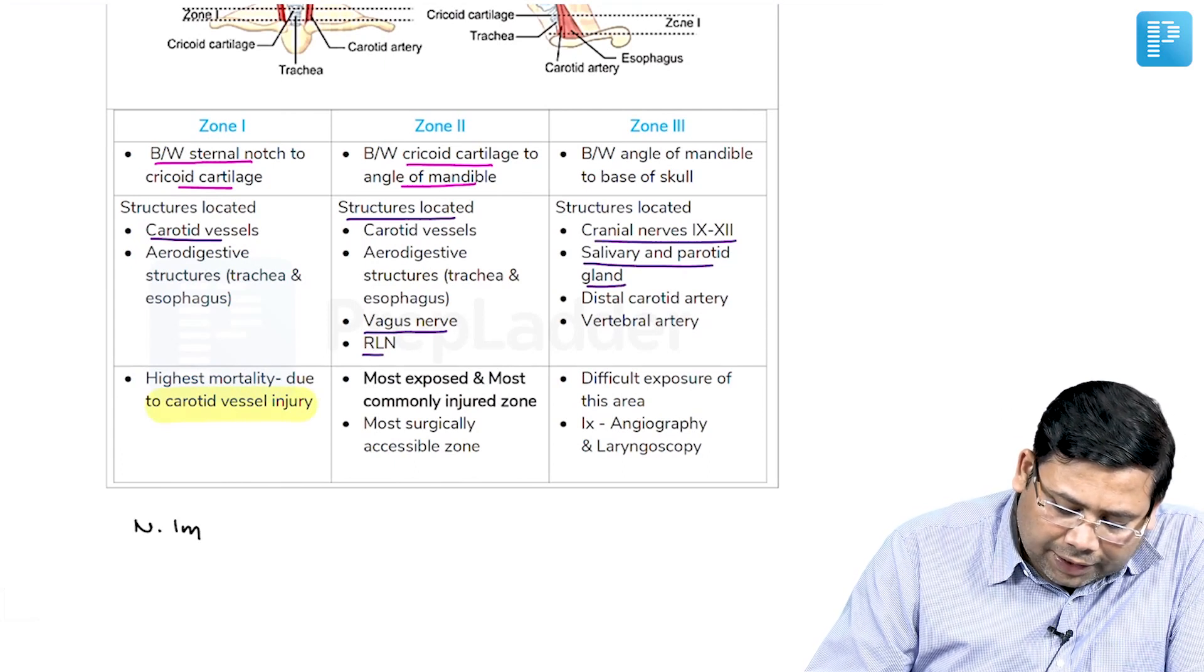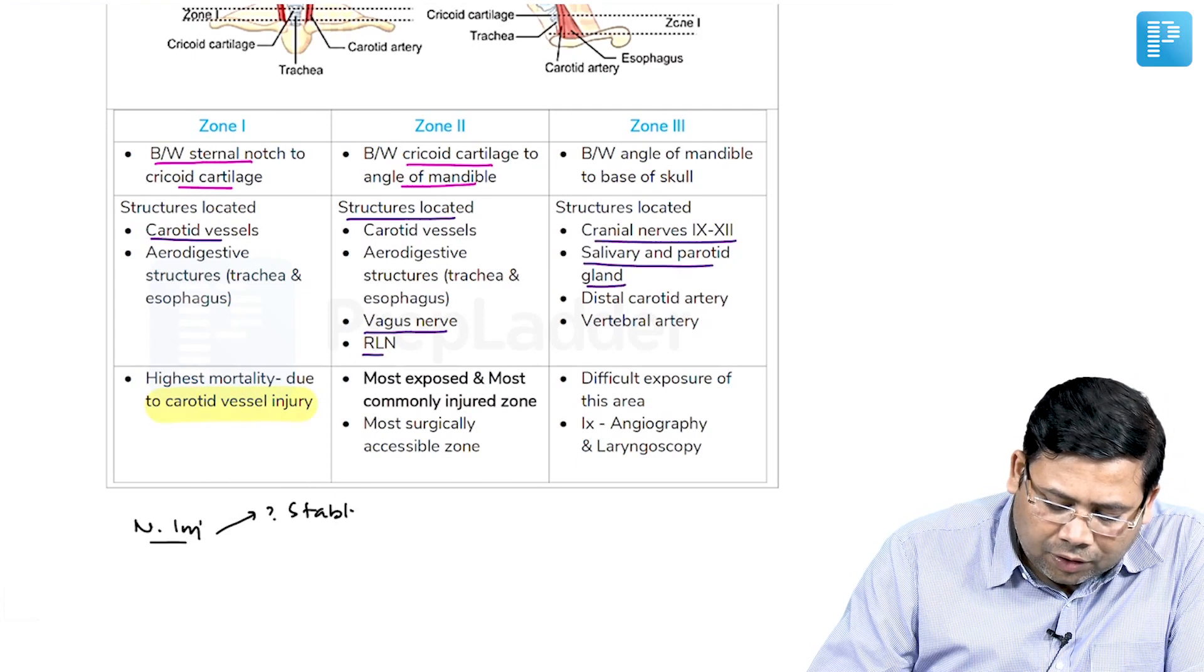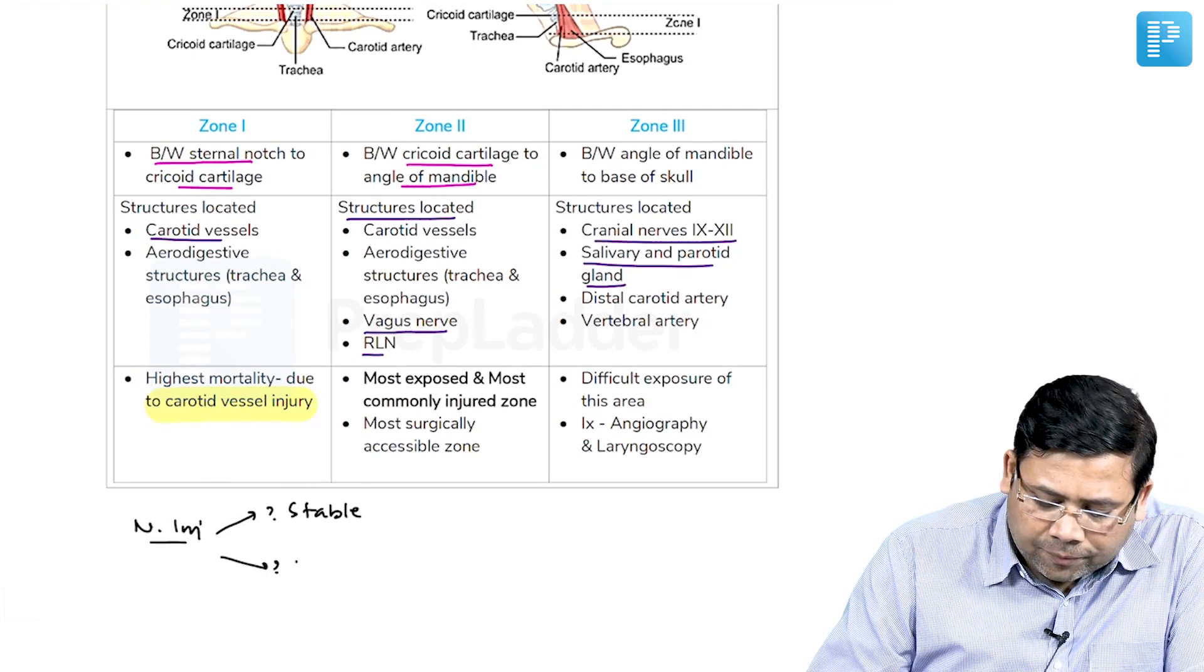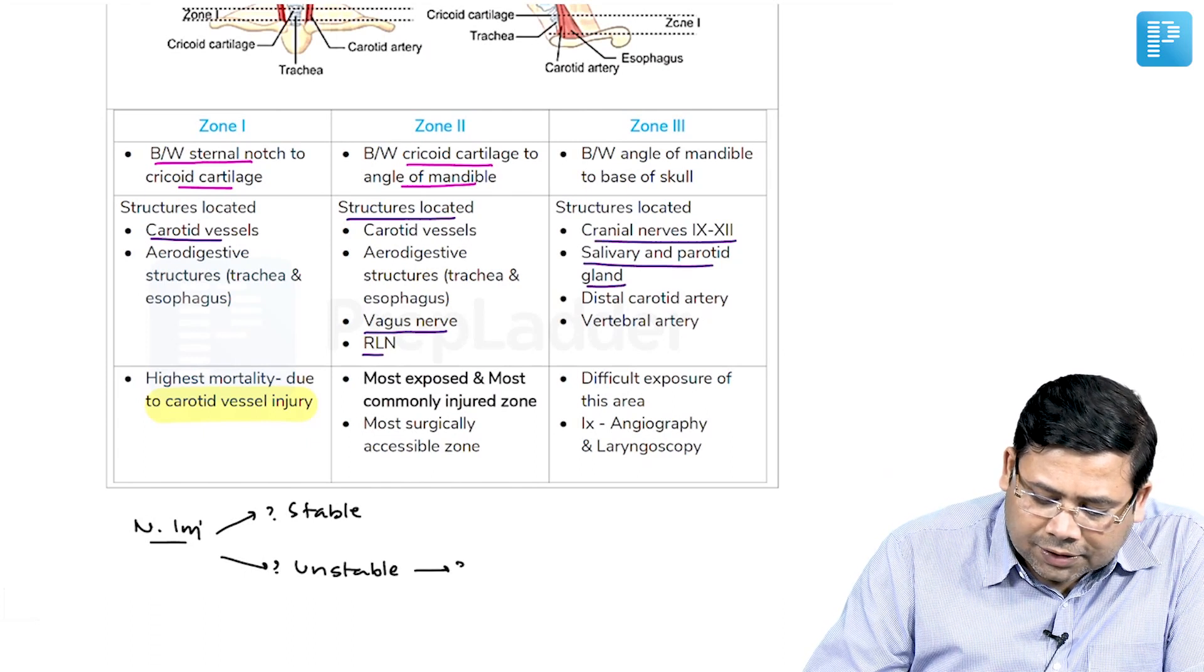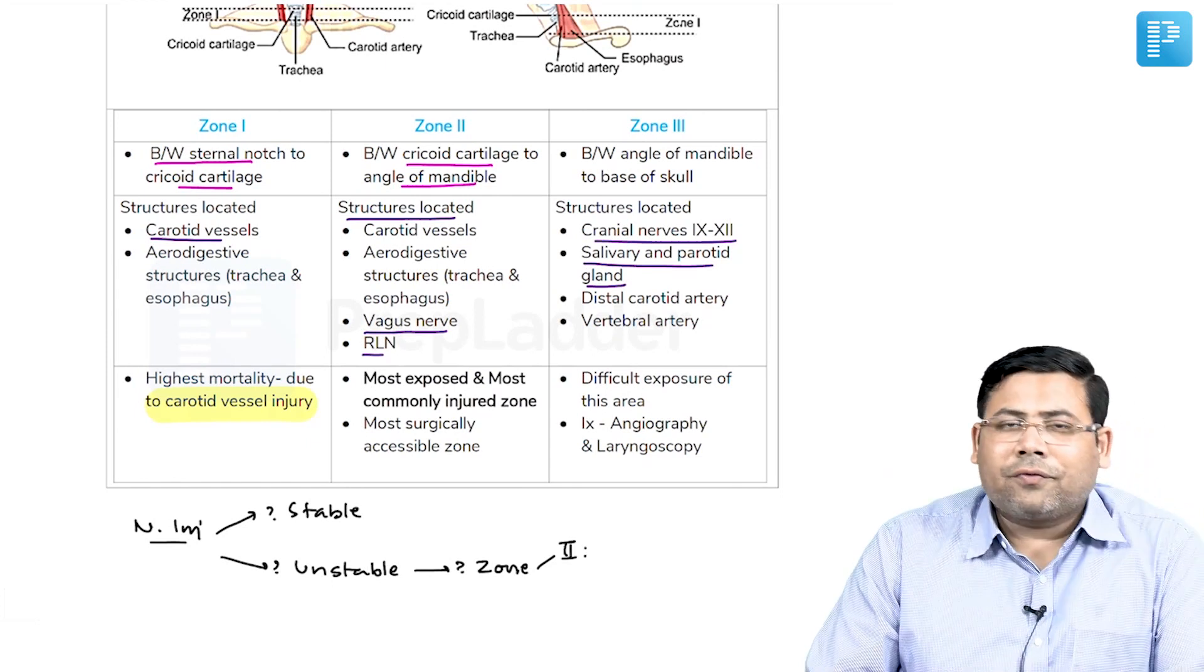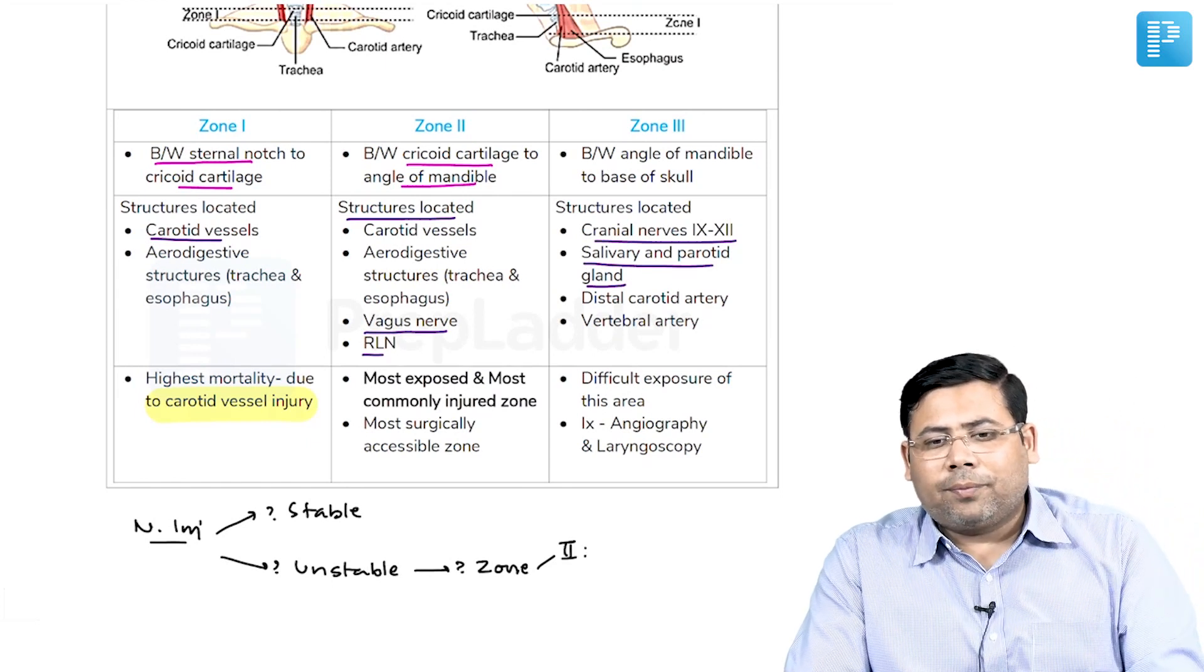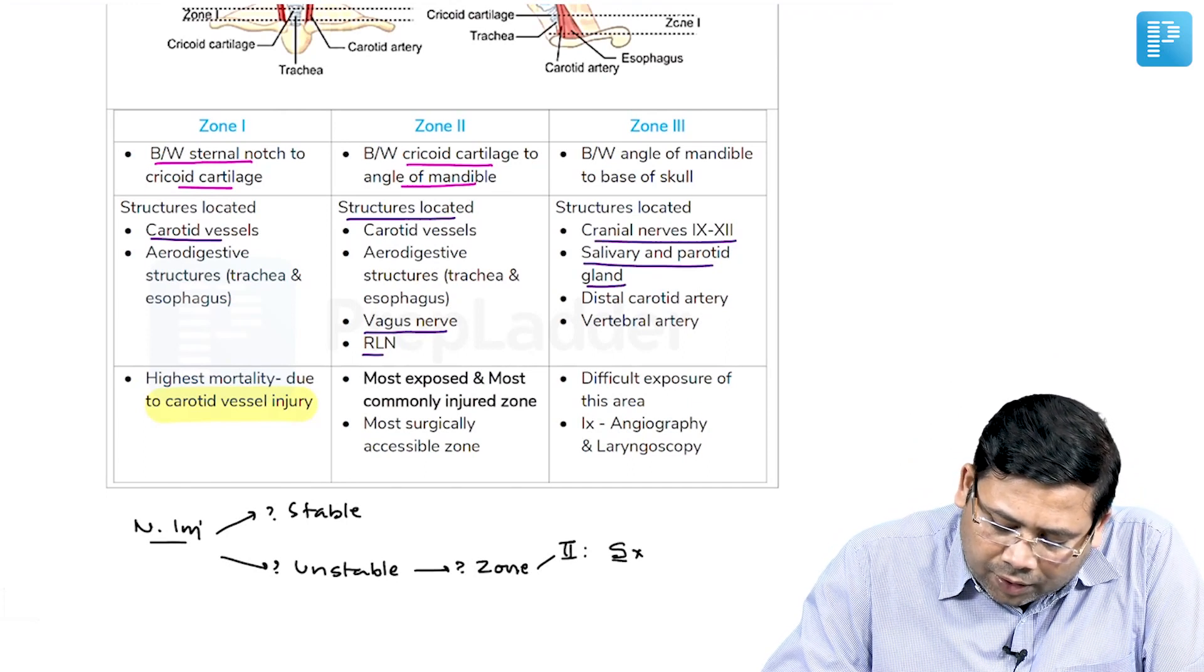So whenever you talk about neck injury, the next question that should be there is whether the patient is stable or the patient is unstable. If the patient is unstable, then the next thing that you need to ask is what zone it is. If it is a zone 2, surgery is not a difficult thing, you make one incision, you are down to the platysma. So zone 2 injuries, you go for surgery, neck exploration.